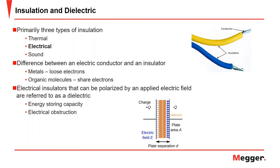When we talk about insulators, you often hear the word dielectric. So what do we mean when we say dielectric? Dielectric materials do not allow electricity to flow through them. However, in the presence of an electrical field, the materials become polarized. A prime example is a capacitor, where you have two oppositely charged plates — one positive and one negative — with an applied electric field.